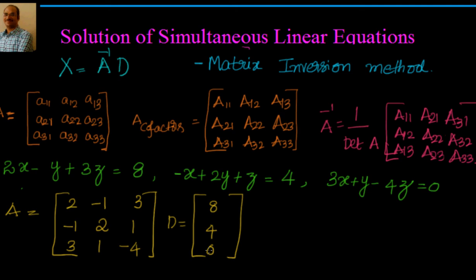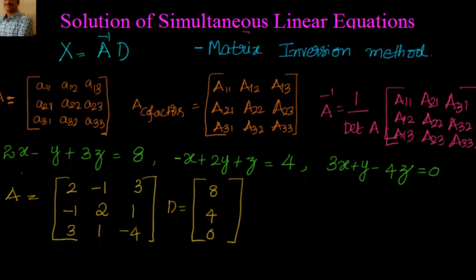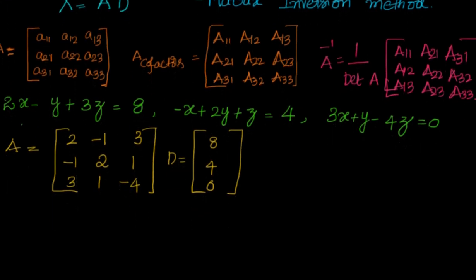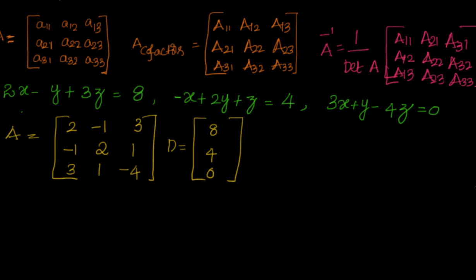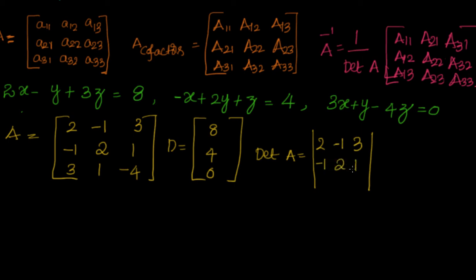We have to find out A inverse. We know A inverse equals the transpose of the cofactor matrix divided by the determinant of A. First we will find out the determinant of A. The determinant of A is written out from the matrix: first row 2, minus 1, 3; second row minus 1, 2, 1; third row 3, 1, minus 4.